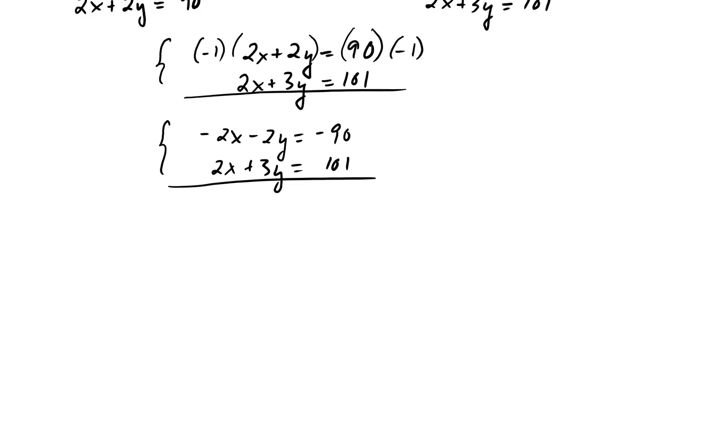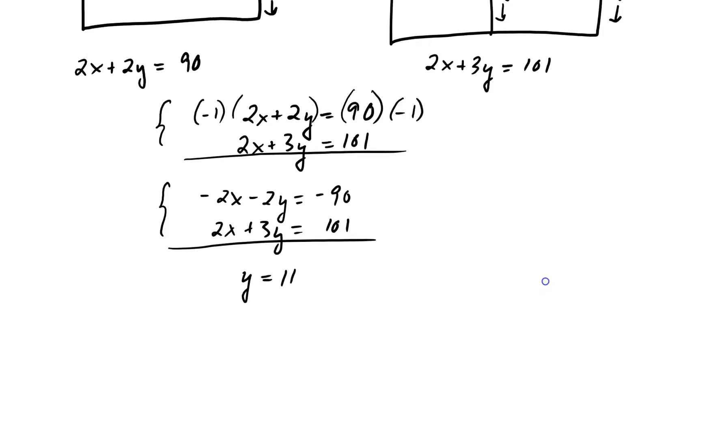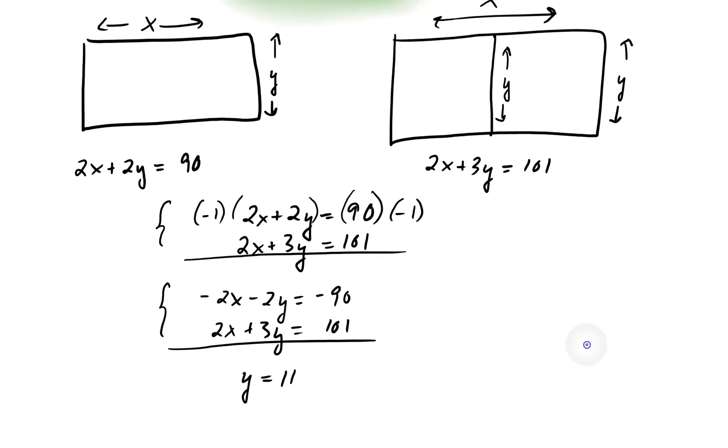And when I add them together, the x's cancel, and I get just y is equal to 11. So that gives me my y right away. Now, y is this shorter side here. So y is 11.